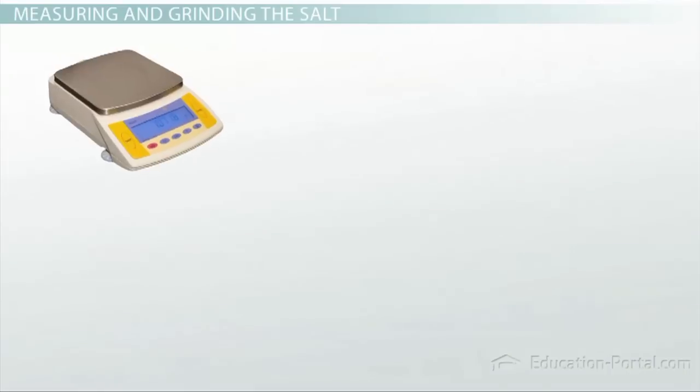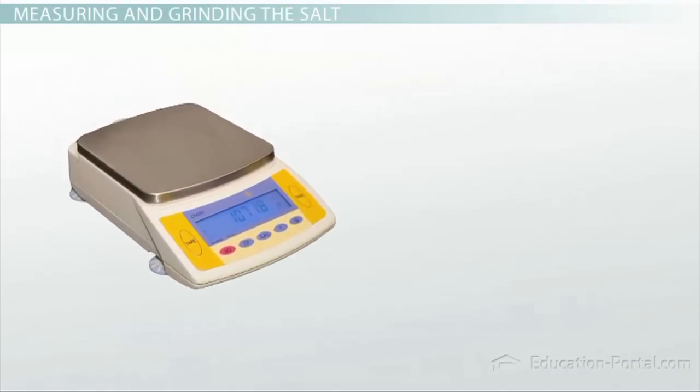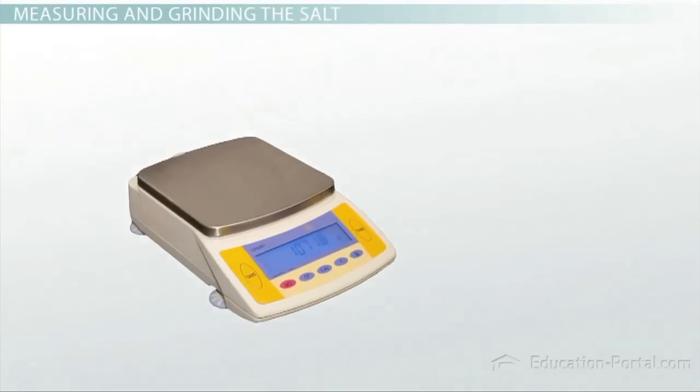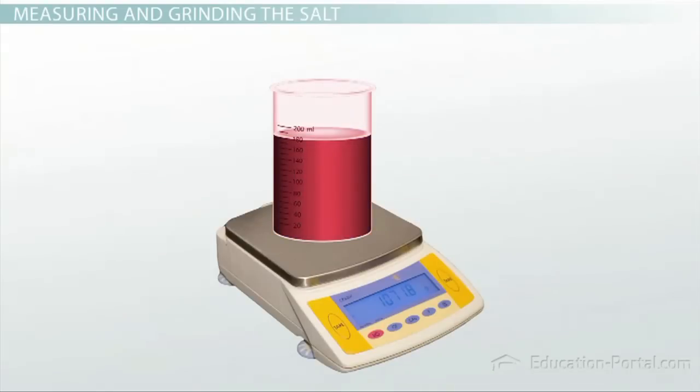Our first stop is a common piece of equipment, a balance. A balance is used to determine the mass of a substance. Often times you would first measure a substance's mass, then react it with something, and then measure its mass afterward.